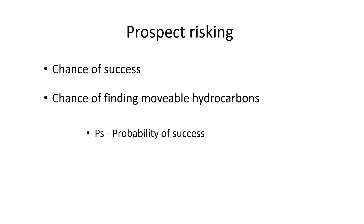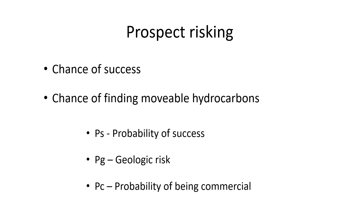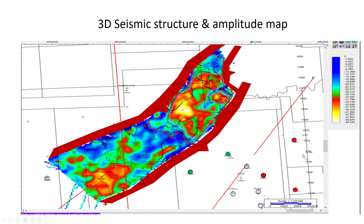Prospect risking is determining the chance of success — the chance of finding movable hydrocarbons. We usually call it POS (probability of success) or PG (geologic risk); sometimes those are interchangeable. You can have other probabilities like probability of being commercial, but we're not going to talk about that right now.